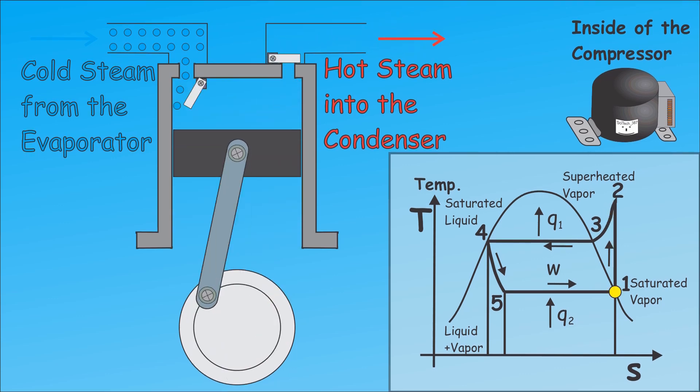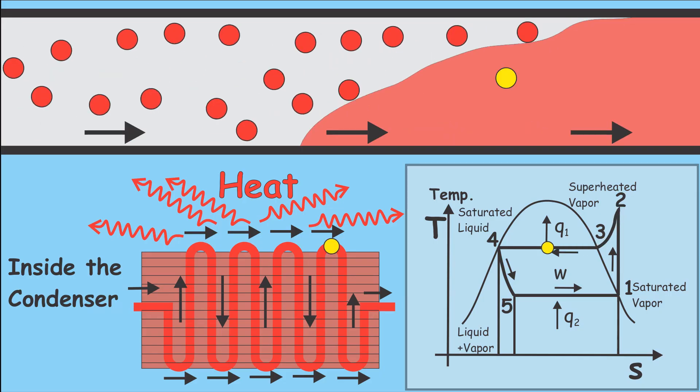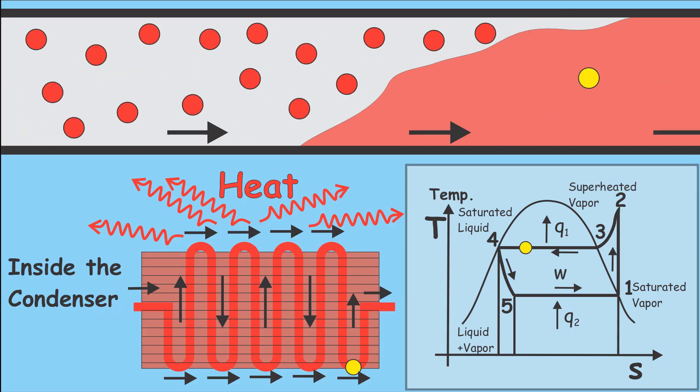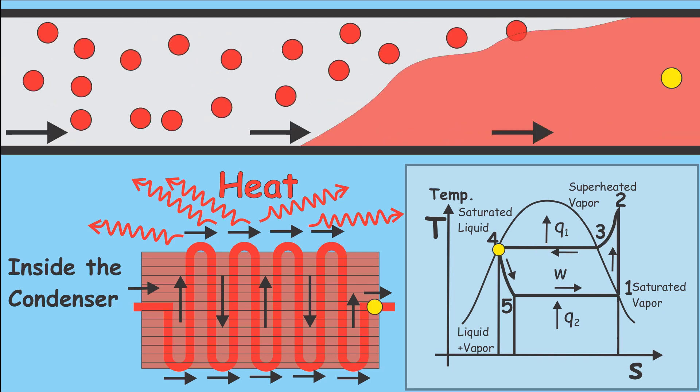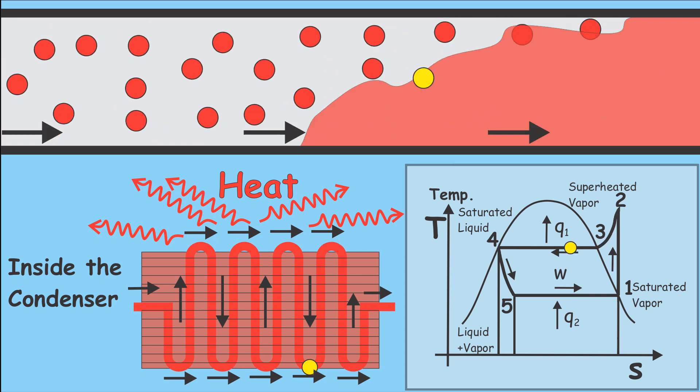After that the compressor releases the steam into the condenser. In its way through the condenser the hot steam releases heat to the environment and condenses completely, changing its state to liquid.